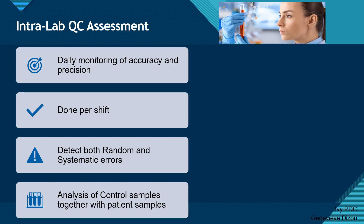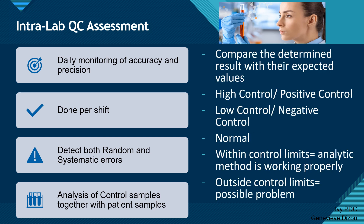Intra-lab can detect both random and systematic errors, as you will see later when we perform the charts. It also involves the analysis of control samples together with the patient samples. We compare the results and determine if they fit the expected value. Usually we have three different types of control materials: the high control or positive control, the low control or negative control, and the normal. These are all tested on all the analytes and all the machines, and then we determine if they are within or outside control limits.